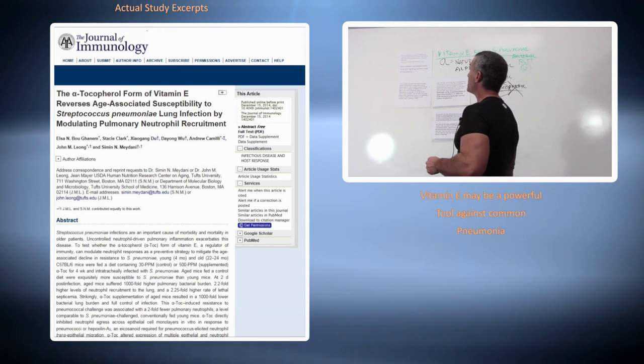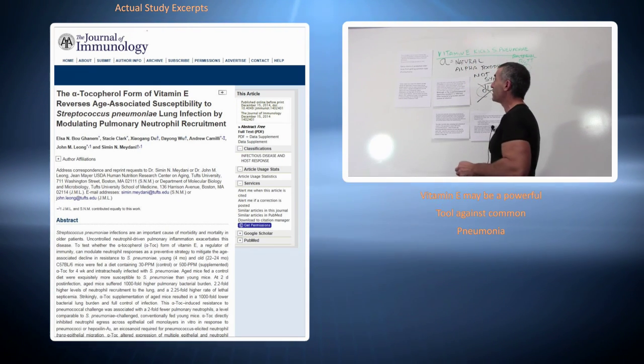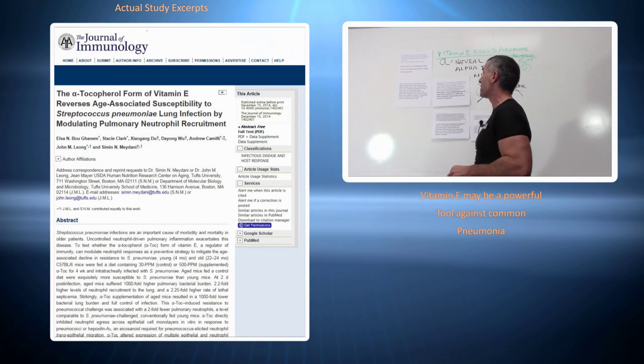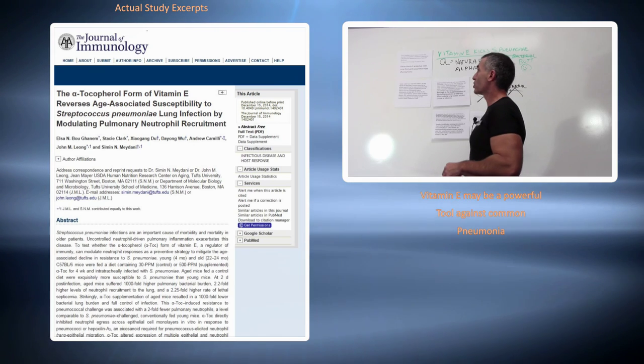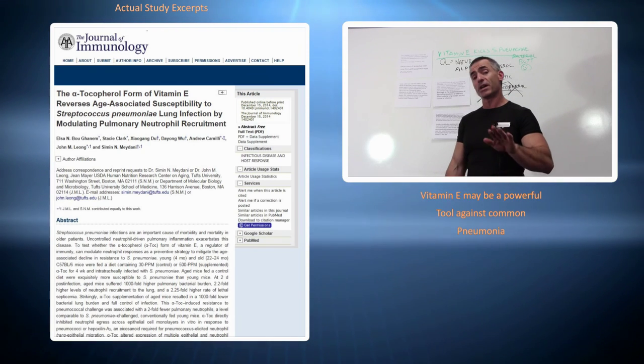The alpha-tocopherol form of vitamin E reverses age associated susceptibility to streptococcus pneumonia lung infection by modulating pulmonary neutrophil recruitment, published in the Journal of Immunology, December 15, 2014.